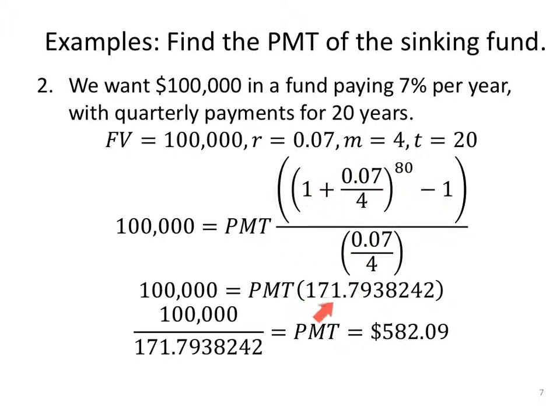We'll find the value of the big fraction, this 171 number. If we knew the payment, we would finish by multiplying, but we don't, so we finish by dividing 100,000 by 171 point stuff. And we'll find that we should put $582.09 quarterly. So we'll make that payment four times a year in order to have $100,000 saved up after 20 years.